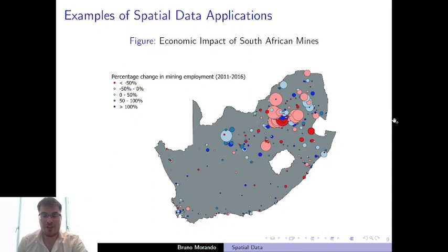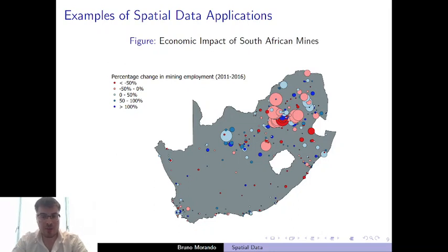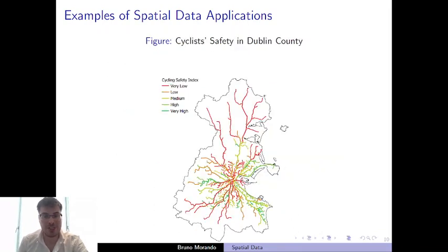This is another map that I created where I showed the increase or decrease of the importance of mining activities across the country, and I used that to show the welfare impact on the local population. Is it a good thing if you live beside a mine? Does it mean that you're going to get higher wages and perhaps new job opportunities? Or is the pollution coming from mining activities offsetting these potential benefits? These are all questions that I was able to answer using spatial data.